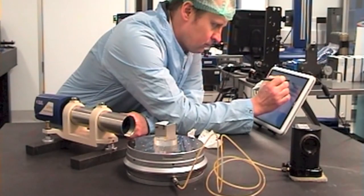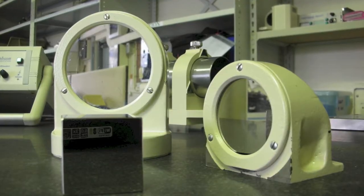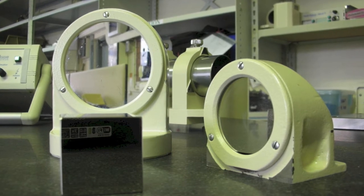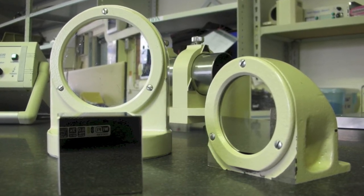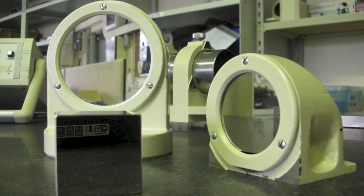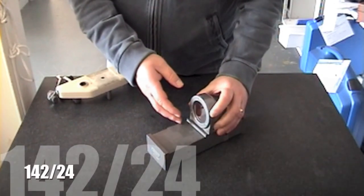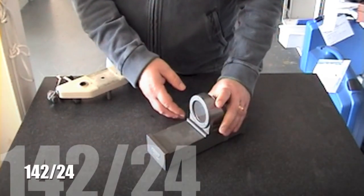An autocollimator measures angle very accurately and we use a reflector as the target. Mirrors need to be flat and a very good surface finish. There are various mirrors, but normally we use this one, the 14224, which is a 50mm diameter mirror.